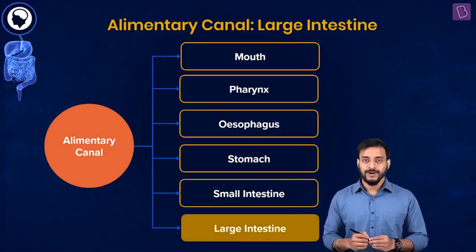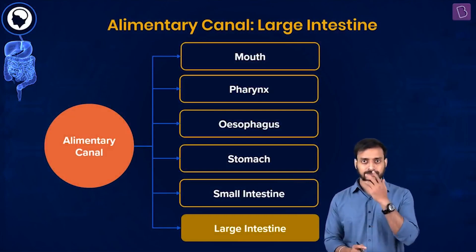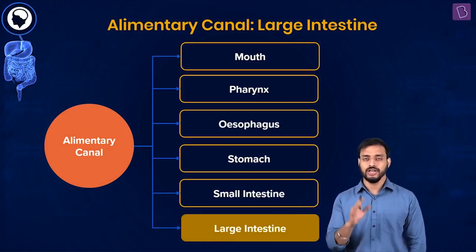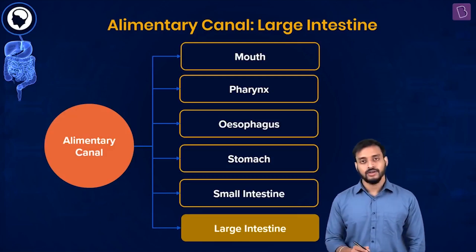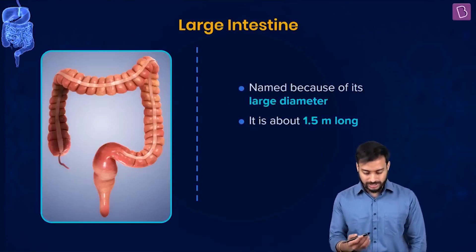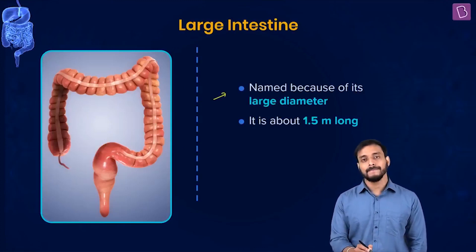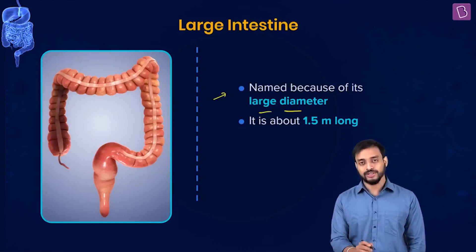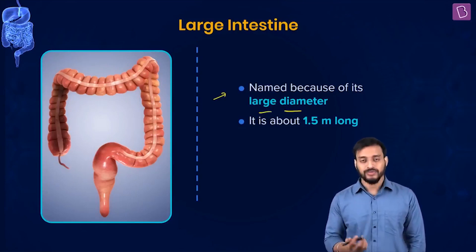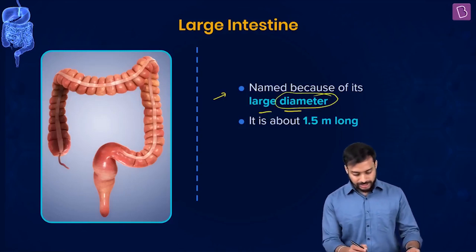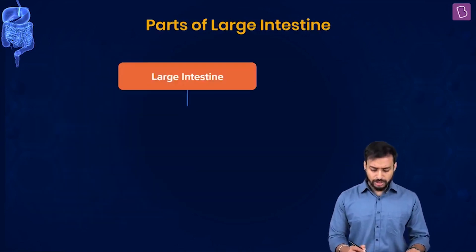Let's talk about the large intestine - what are its functions? First, let's understand why it's called 'large.' It's not because of its length; it's about 1.5 meters long, which is actually less than the small intestine. It's called 'large' because of its larger diameter compared to the small intestine.